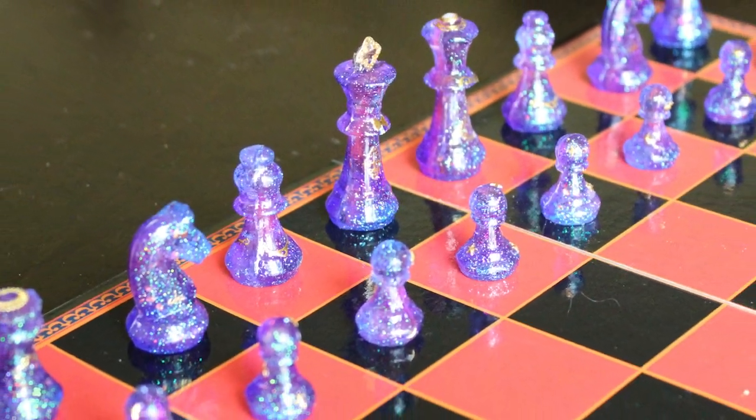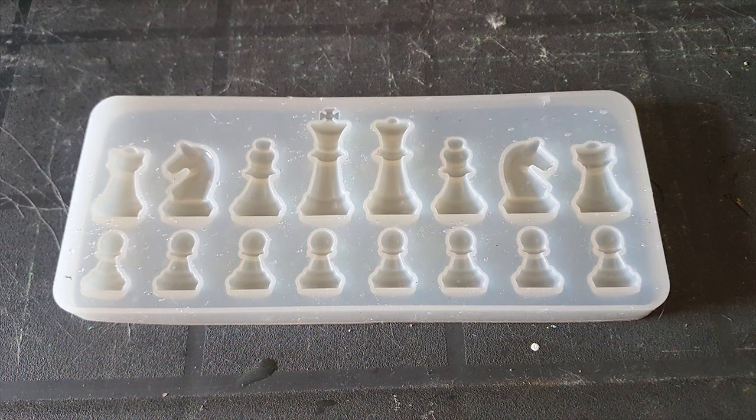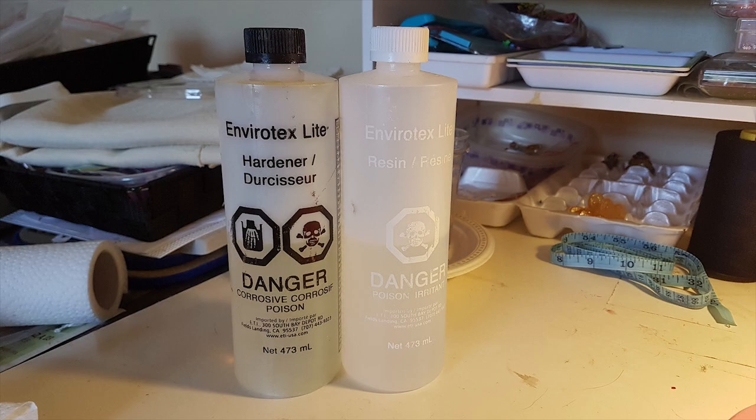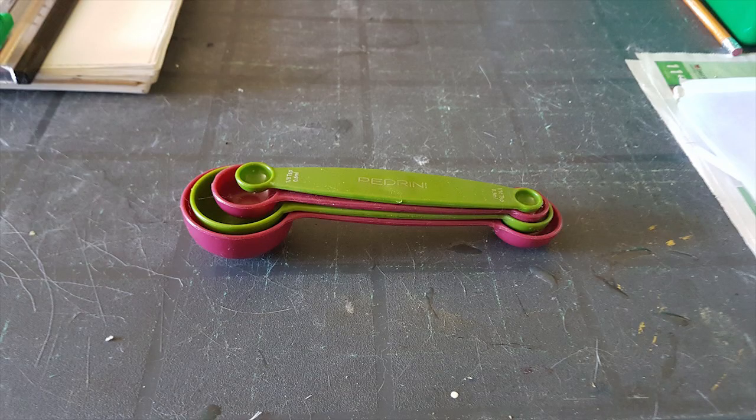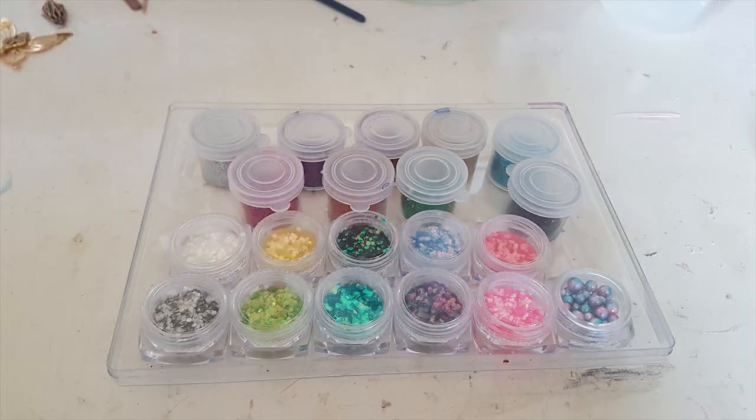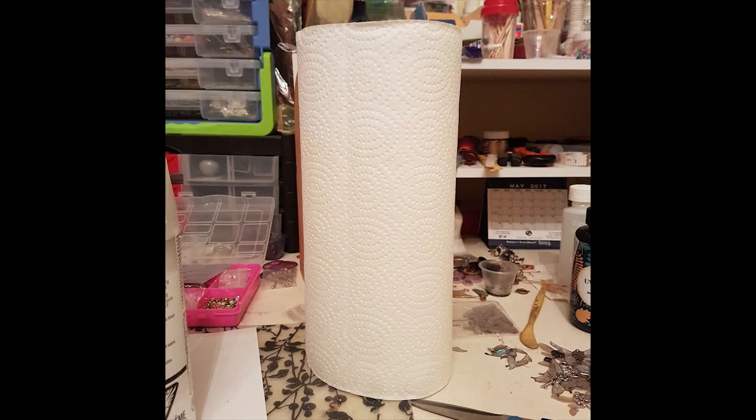Assemble your weapons of craft. This is the chess piece mold I used. I also used a two-part liquid resin, plastic cups, measuring cups or spoons, stir sticks, glitter and pigment, heat gun or lighter, gloves, and paper towel for cleanup.